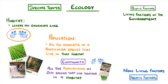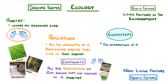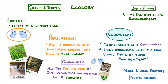If we put all of these together — so the habitat, the community that lives there, and all of the biotic and abiotic factors — what we have overall is the ecosystem, which we could describe as the interaction of a community of living organisms with the non-living parts of their environment. And ecology is really about understanding how these ecosystems function, and also how they might change in the future.